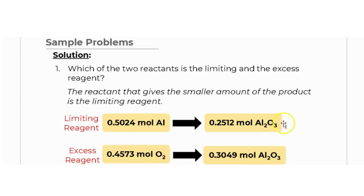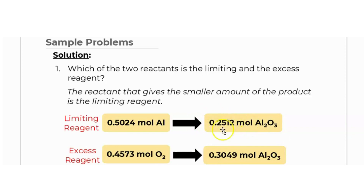Comparing the two answers: aluminum yields 0.2512 moles of aluminum oxide, while oxygen yields 0.349 moles of aluminum oxide. The reactant giving the smaller amount of product is aluminum, so aluminum is the limiting reagent.